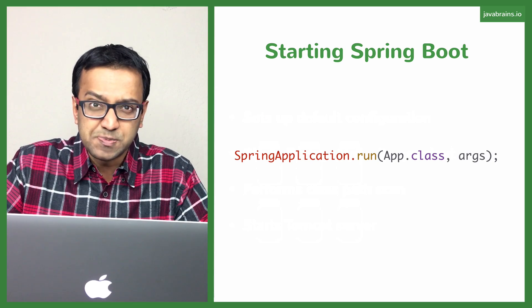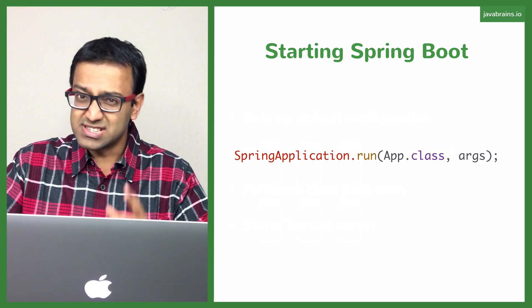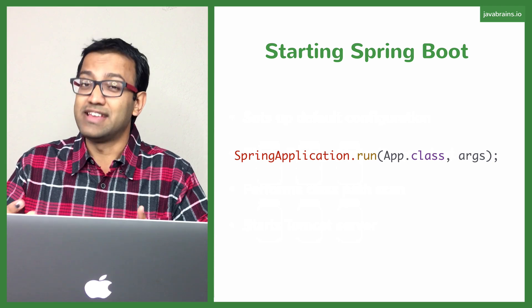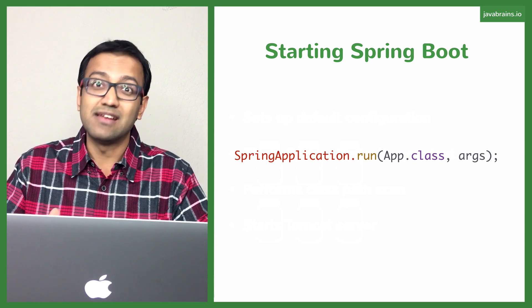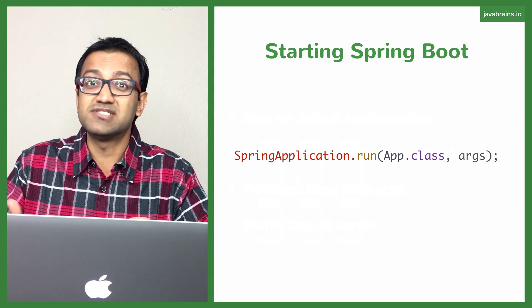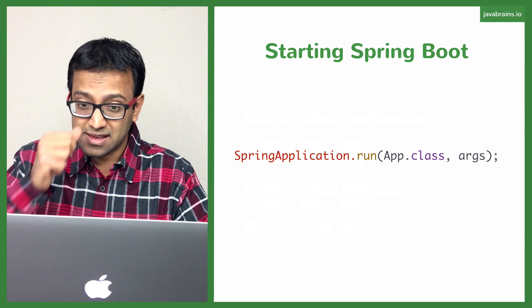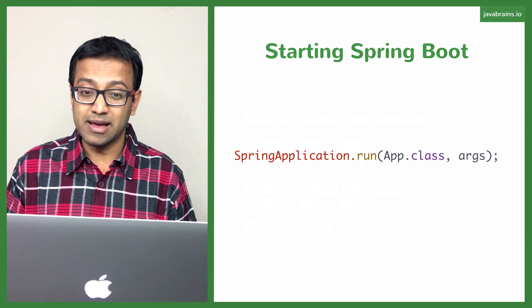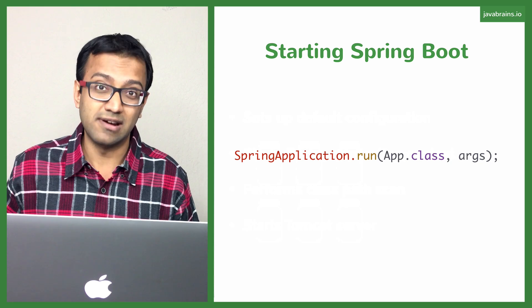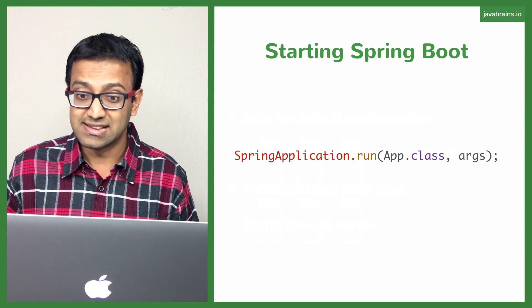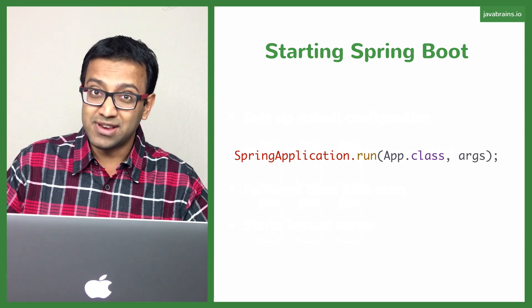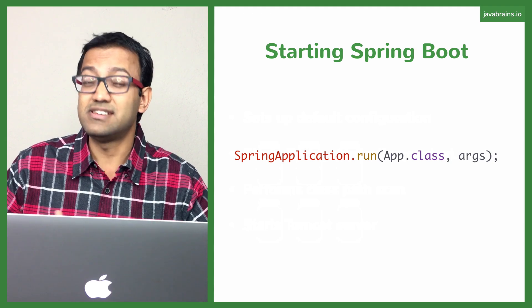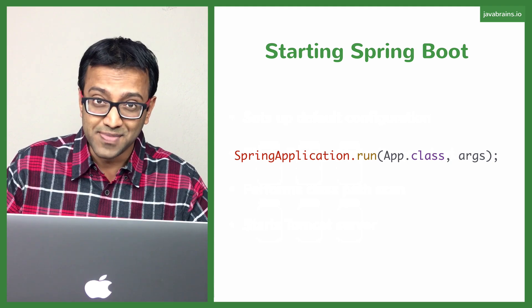What happened when we started Spring Boot? This is the magic line. SpringApplication.run takes in two arguments: one is the class and one is the command line arguments that you pass to the main method. The important thing is there is a static class called SpringApplication with a static method called run, and it takes in this class, which has the @SpringBootApplication annotation, and this does a whole lot for you.